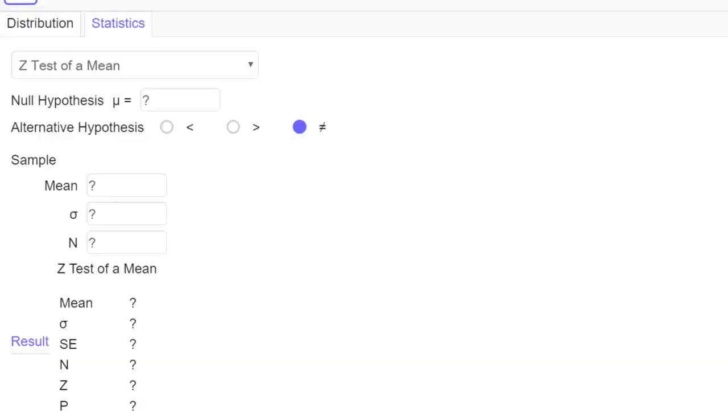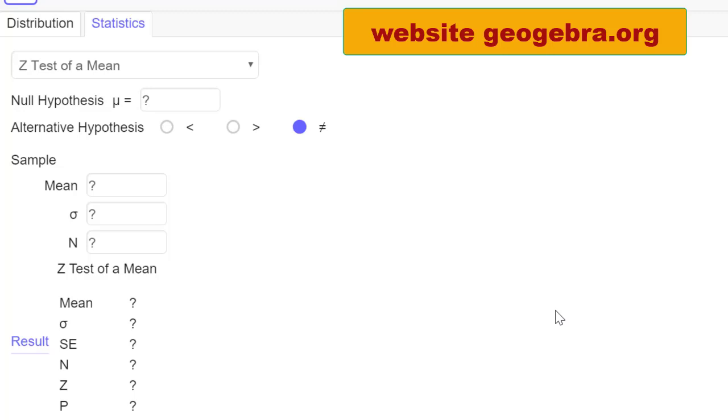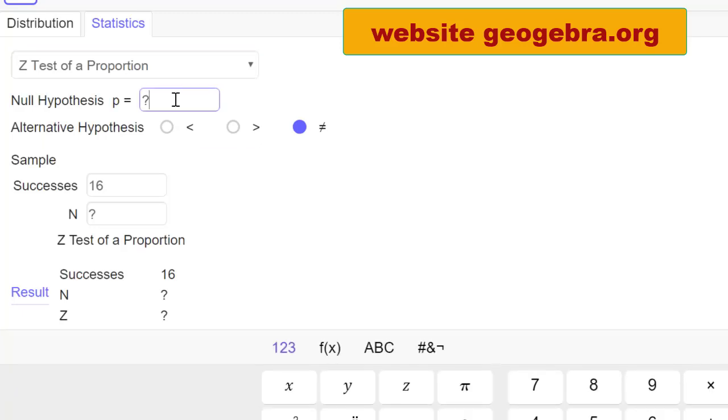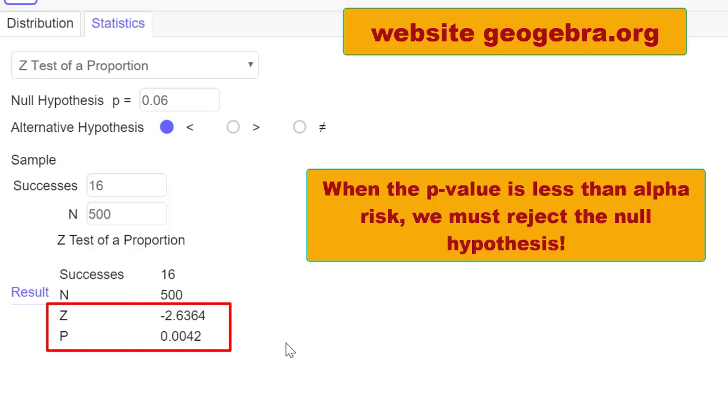We can also perform this hypothesis test of proportion on a software called GeoGebra. GeoGebra is a free downloadable software. In GeoGebra I select Z test of a proportion. Null hypothesis I write as 0.06. Alternate hypothesis less than. Samples, successes or defective pieces 16. The sample size is 500. Now it shows the result: Z equals minus 2.6364 with a P value of 0.0042. As we know the rule when the P value is less than the alpha risk, which is 5% here, so since this P value is less than 0.05, we must reject the null hypothesis.